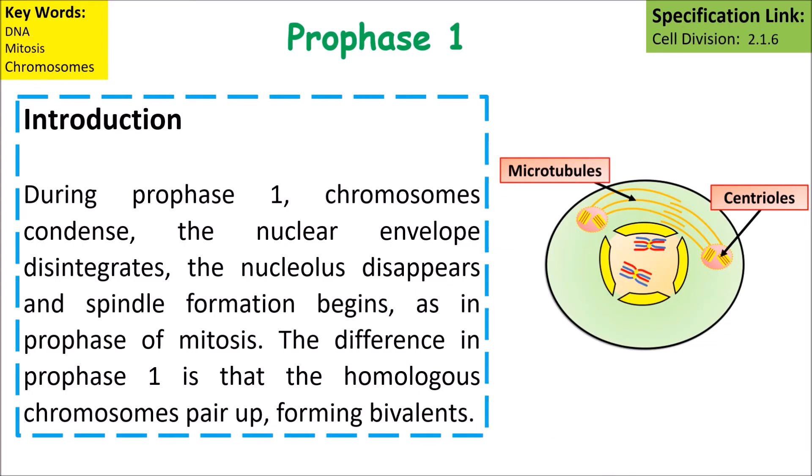During prophase one, chromosomes condense, the nuclear envelope disintegrates, the nucleolus disappears, and spindle fibre formation begins — similar to the prophase of mitosis. The difference in prophase one is that homologous chromosomes pair up, forming bivalents.